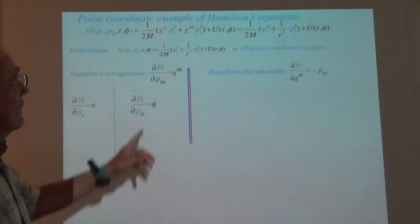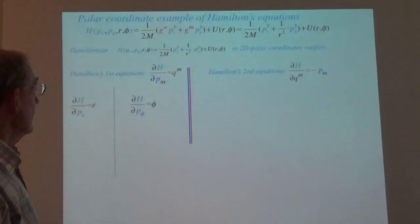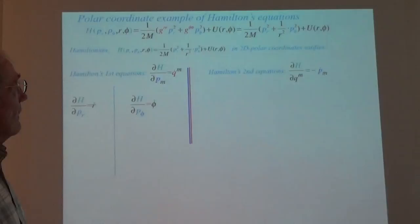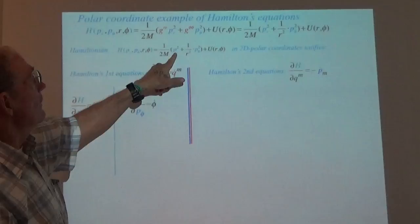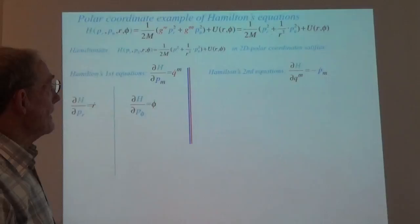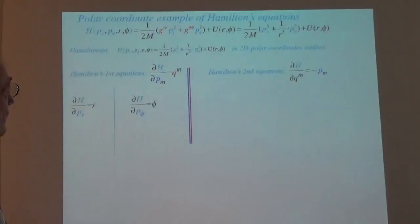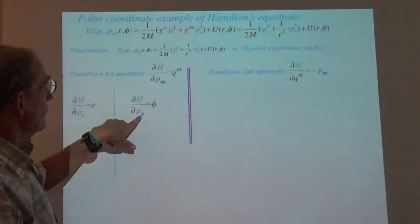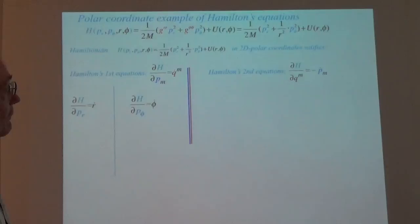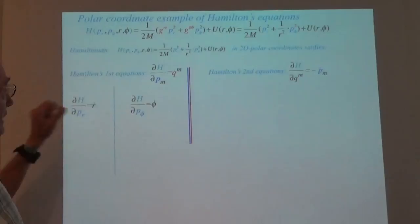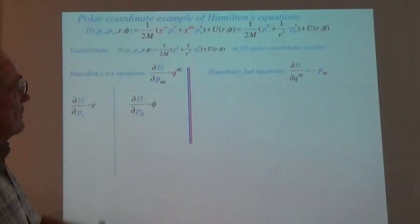If I look in there and take the partial derivative of H with respect to P_R: two cancels one over M times P_R, so that cancels out to give us R-dot. And then the partial derivative of H with respect to P_phi gives us phi-dot. Those are just what we would have gotten from our geometry — that's the P-gradient of H. The velocity associated with R, and the time rate of change of the angle phi goes with the angular momentum.